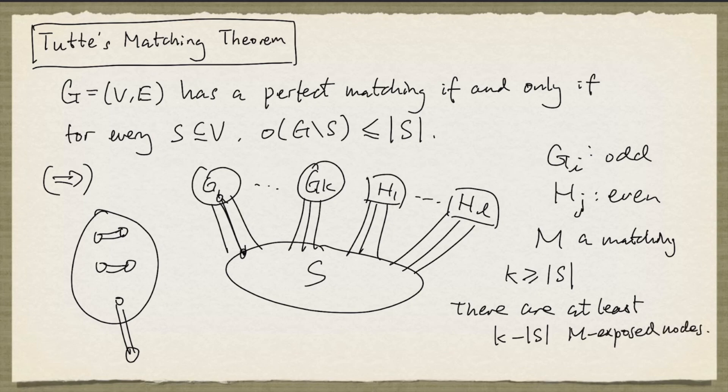So this is the minimum number of M exposed nodes. And so the number of edges in M cannot exceed the number of nodes in the graph, minus this quantity, K minus cardinality of S, divided by 2.